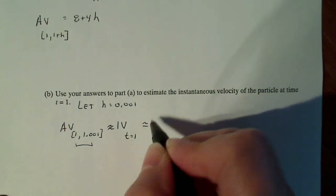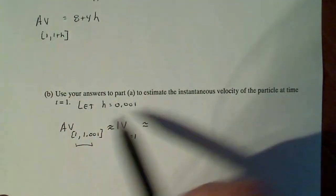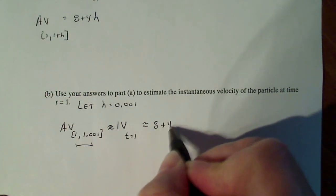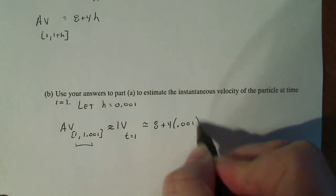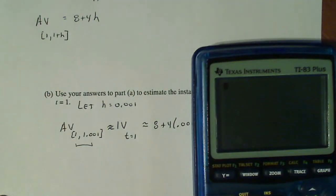So my instantaneous velocity will approximately equal this guy with h being 0.001. So 8 plus 4 times 0.001. And let's see what that turns out to be. 8 plus 4 times 0.001.